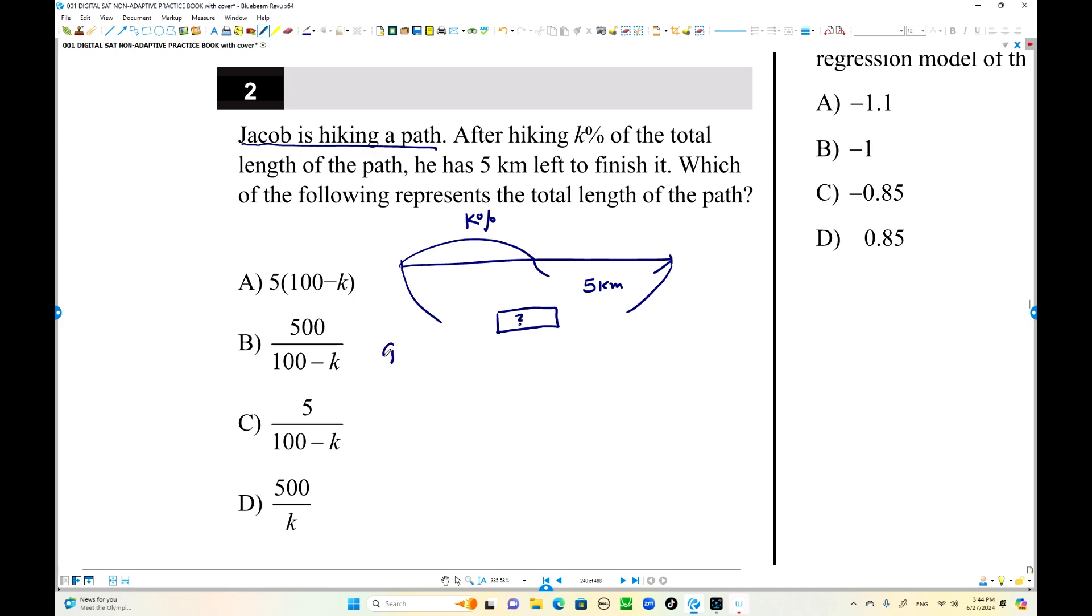Maybe first you can use this method. Total length you can use x kilometers. But five kilometers is actually 100 minus k percent. The total length is x times 100 minus k over 100. When you multiply this one, this is five kilometers.